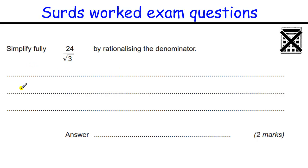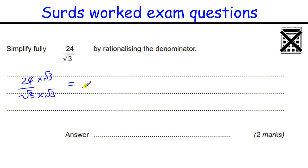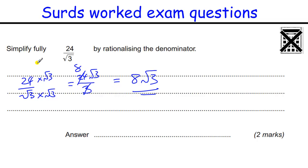Rationalise the denominator: 24 over root 3. We multiply top and bottom by root 3. That makes root 3 times root 3 just 3. 24 times root 3 gives 24 root 3, and 24 divided by 3 is 8. So we end with 8 root 3, for 2 marks.